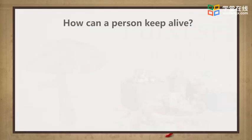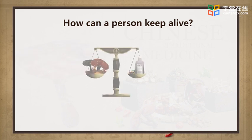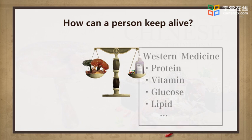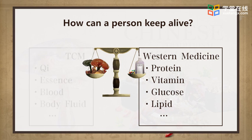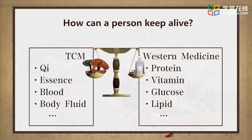Let's try to answer the following question: how can a person keep alive? From the Western medicine view, it should be protein, vitamin, glucose, lipid, etc. TCM has a totally different answer for this question. It should be qi, essence, blood, body fluid, etc.